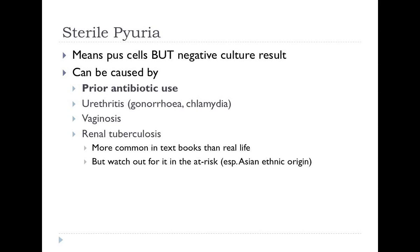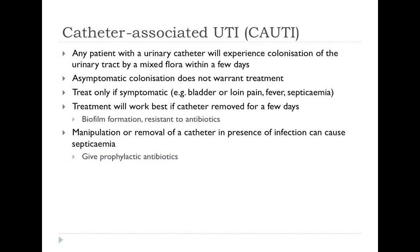Sterile pyuria means white cells in the urine but no organisms on culture. By far the most common cause is that the patient had antibiotics sometime before the urine reached the lab, so we still see the white cells but bacteria are inhibited. Other causes include urethritis — sexually transmitted disease, bacterial vaginosis — and, often listed at the top of textbooks but uncommon in real life, renal tuberculosis.